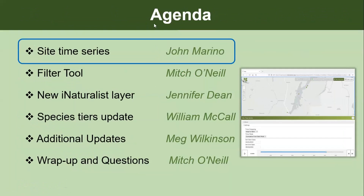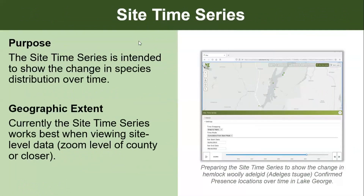For the first IMAP update, we'll hear from John Marino, who will showcase the site time series tool. This is a new piece of functionality added to the map interface on IMAP. The general intent is to show the change in species distributions over time. There's essentially what appears to be a time slider — as it progresses, what you'll see in the map reflects the data at that point in time.